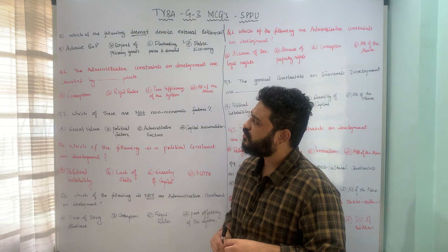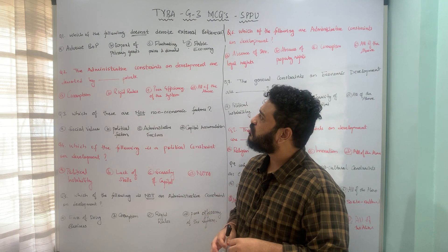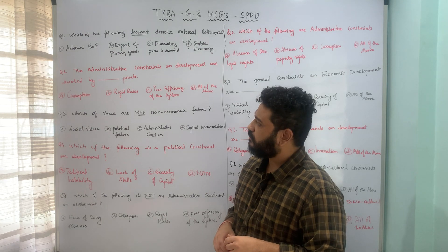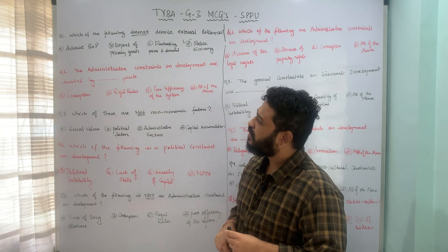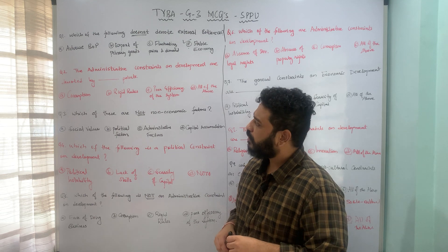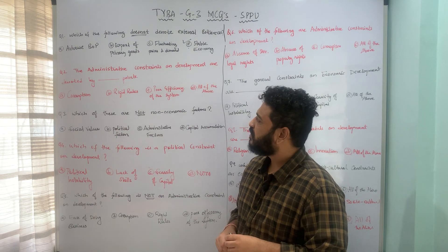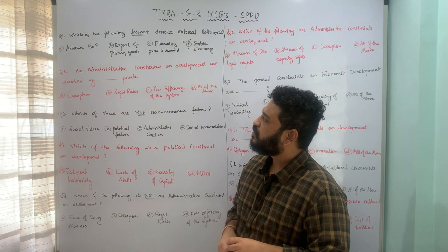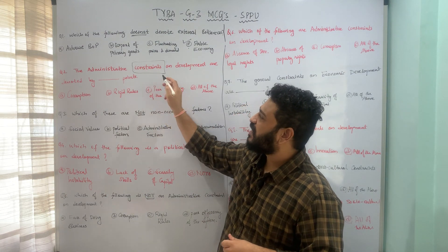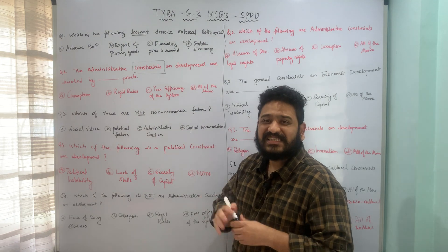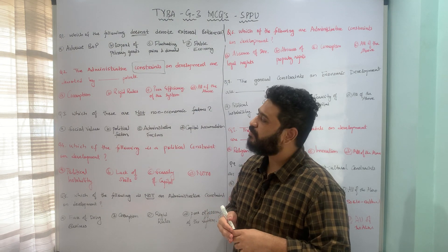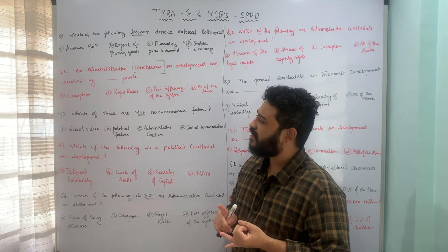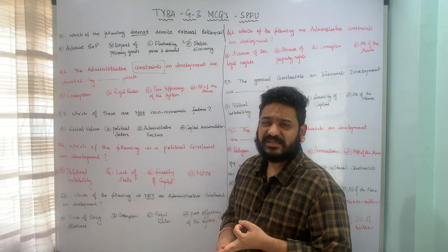The next question asks: the administrative constraints on development are denoted by how many points? The options are: A) corruption, B) rigid rules, C) poor efficiency of the system, and D) all of the above. Constraints act as obstacles to the process of development. Corruption, rigid rules, and poor efficiency all hinder economic growth.